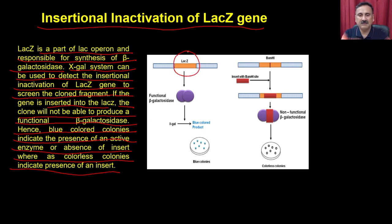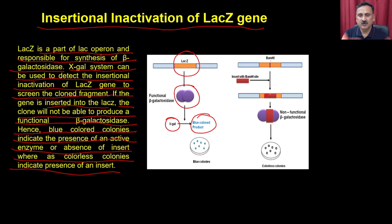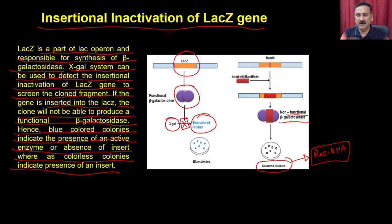The lacZ gene produces functional beta-galactosidase, converting X-gal into a blue-colored compound, giving blue-colored colonies. But if you use the BamHI site present in lacZ and insert your fragment within the coding sequence of lacZ, it produces non-functional beta-galactosidase, which cannot catalyze the reaction, giving colorless colonies. These colorless colonies are the ones containing the recombinant DNA — so they indicate the vector contains the recombinant DNA.